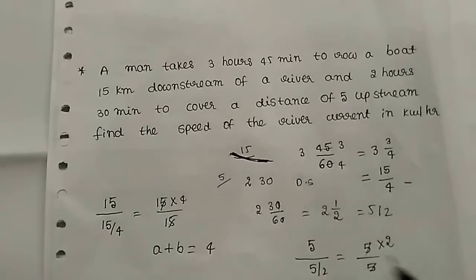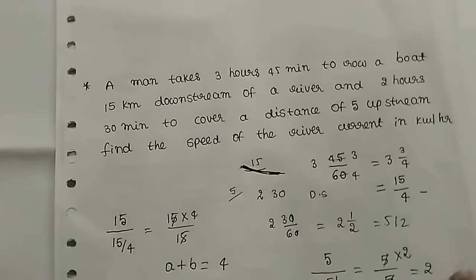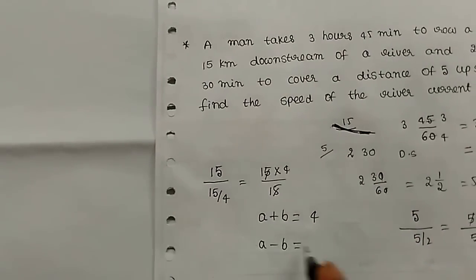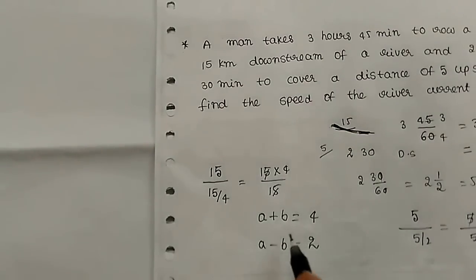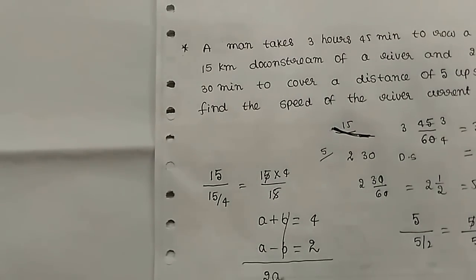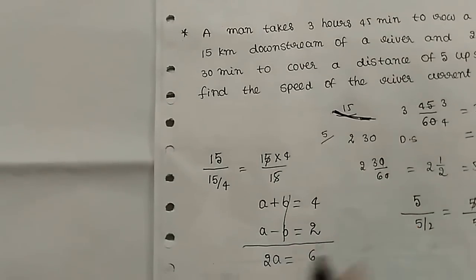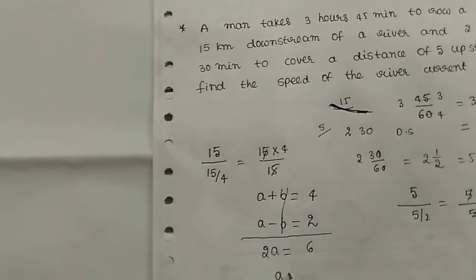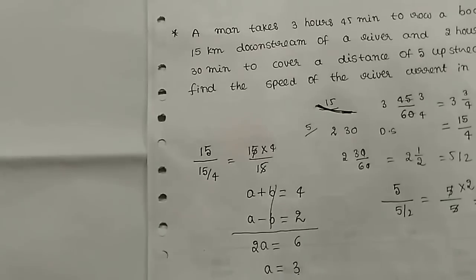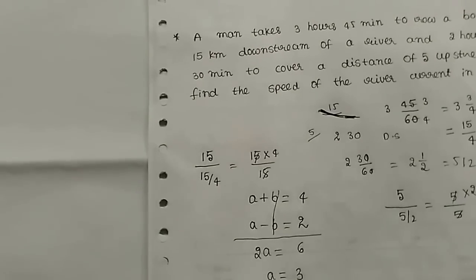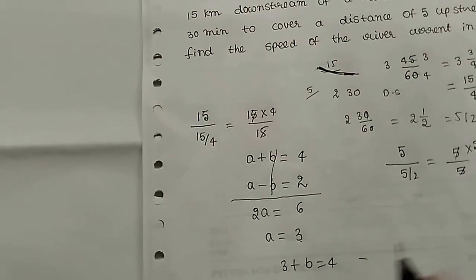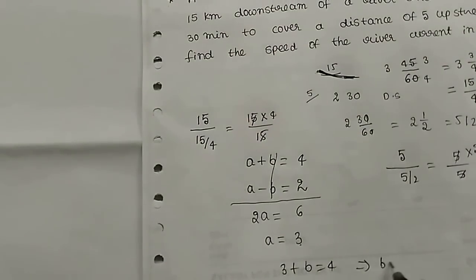Upstream is a minus b, so a minus b equals 2. From the downstream equation, a plus b equals 4. Solving: 2a equals 6, so a equals 3. Therefore b equals 1.